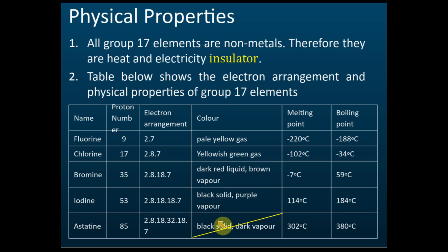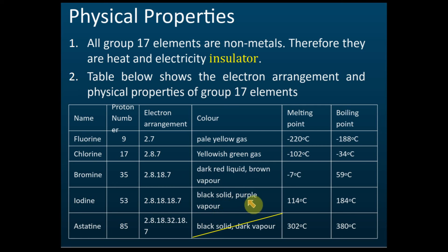Chlorine is yellow-green, bromine is reddish-brown or dark red and is a liquid, and iodine is a black solid. But if you heat iodine, it will sublimate and become a purple vapor.